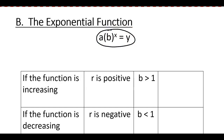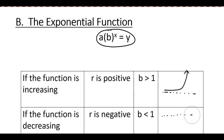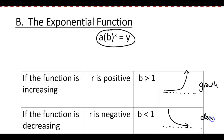When B is greater than one, the exponential function is increasing — the graph goes upward — and that's called growth. When B is less than one, the function is decreasing — the graph goes downward — and that's called decay.